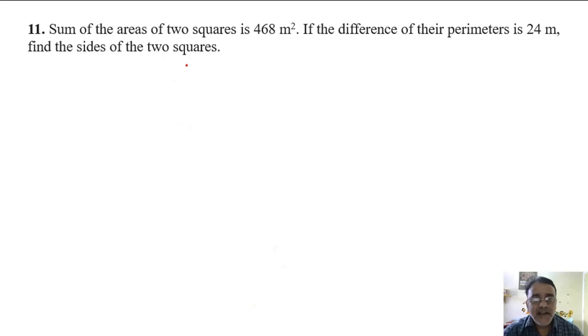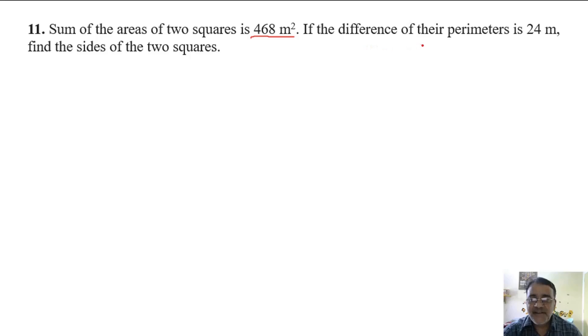The sum of the areas of two squares is 468 square meters. If the difference of their perimeters is 24 meters, find the sides of the two squares.